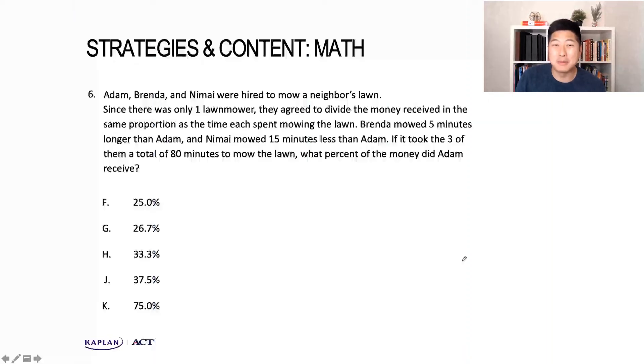Here we had a word problem. If you're anything like me, word problems can drive you crazy sometimes, so I had to make sure we at least covered one. Like every problem, always start with what they're asking for, which is the percent of money that Adam received. That percent of money that Adam received is going to be equal to the percent of time that he worked. How do I know that? The problem tells us they agreed to divide the money in the same proportion as time spent.